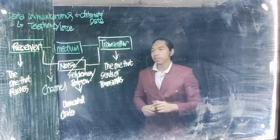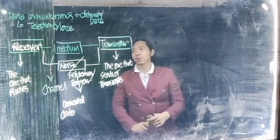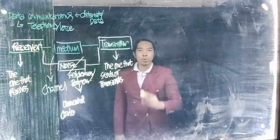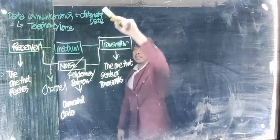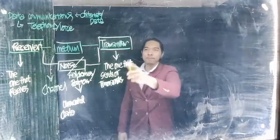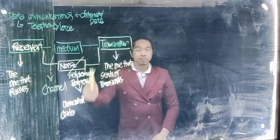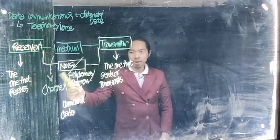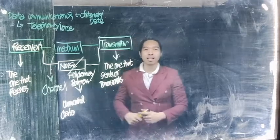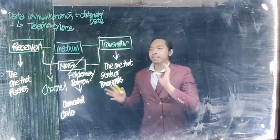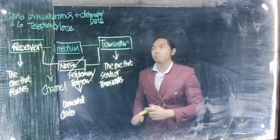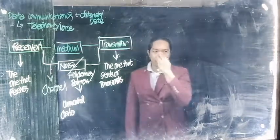So yun yung mga possible na nangyayari dito. So basically, to summarize, a basic communication system consists of a speaker or transmitter, a receiver, a medium or channel, and noise and barriers. Yun yung mga bagay na bumubuo ng communication system.